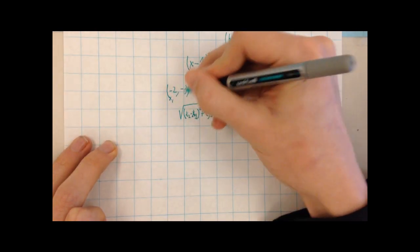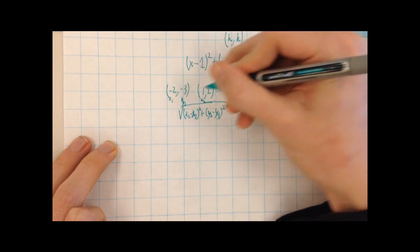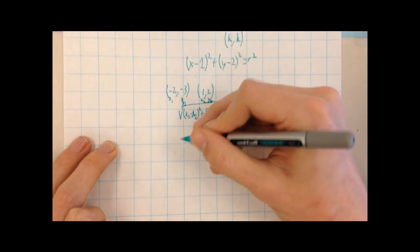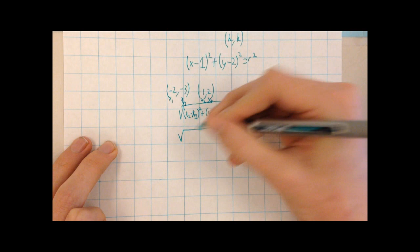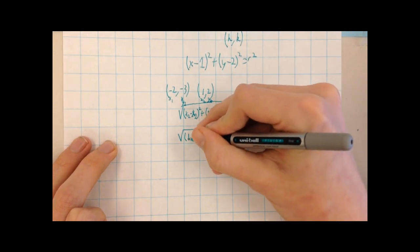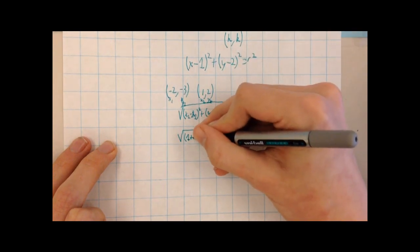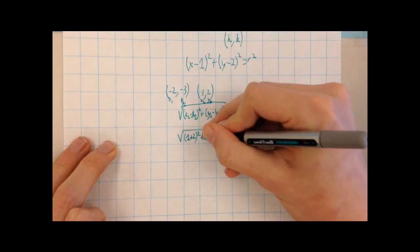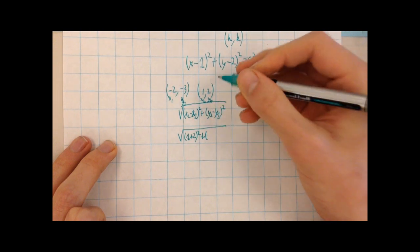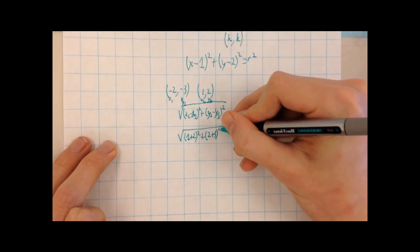So here's x1, x2, y1, y2. Square root of 1 minus negative 2, so that will end up being plus 2 squared, plus... This is 2 minus negative 3, that will end up being 2 plus 3 squared.